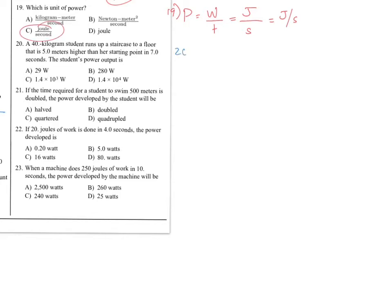Number 20. Power output. Okay, so let's see here. We're given a mass. We're given a distance. And we have a time. We don't have work, but we can find that. Okay, our force here is a student's weight which we don't have. We gotta use M times G.